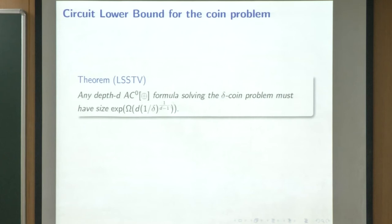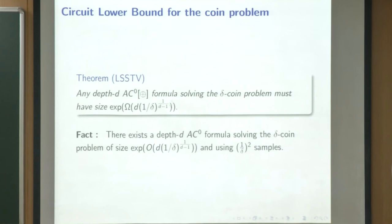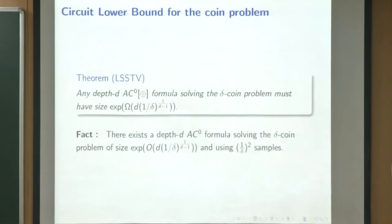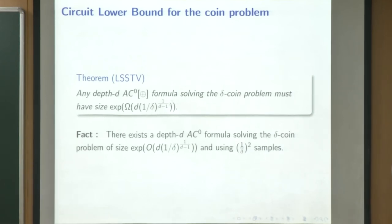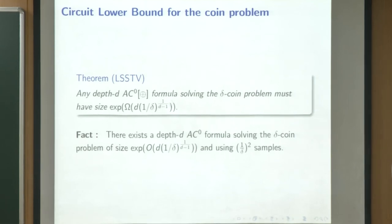Majority performs poorly because a factor of 2 appears in the exponent, making it much worse. So majority will not help in solving the delta coin problem efficiently. However, we can use a randomized formula that solves the delta coin problem using the optimal number of samples, namely 1/delta-squared. Since we cannot do with fewer than 1/delta-squared samples — that is folklore — a randomized formula achieves optimal sample complexity and optimal size.